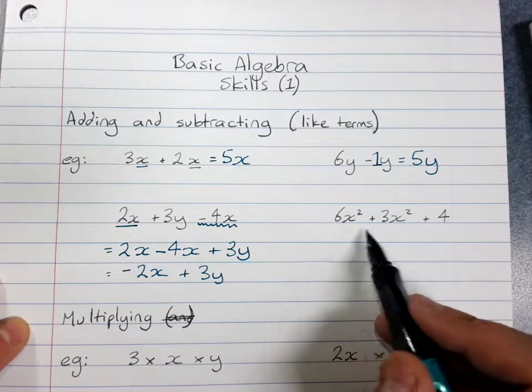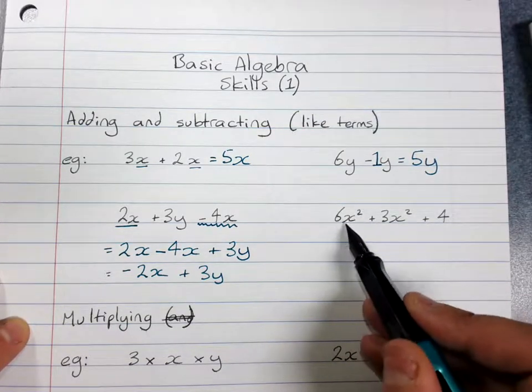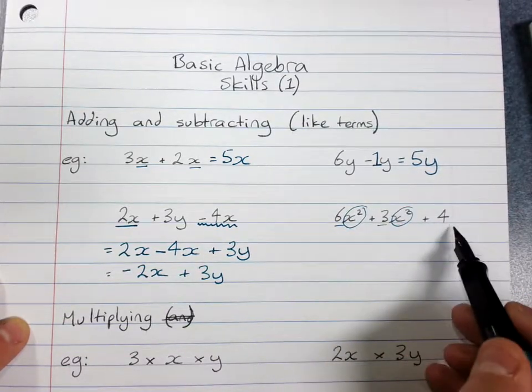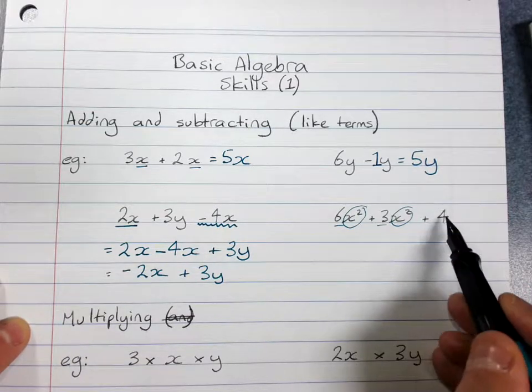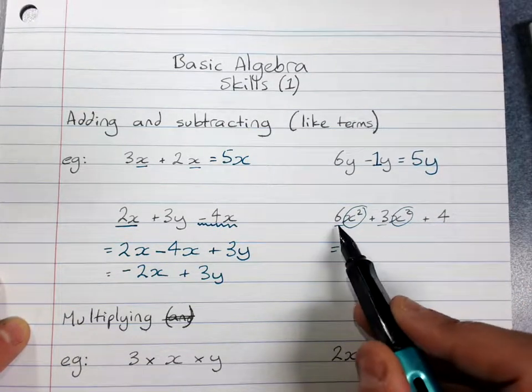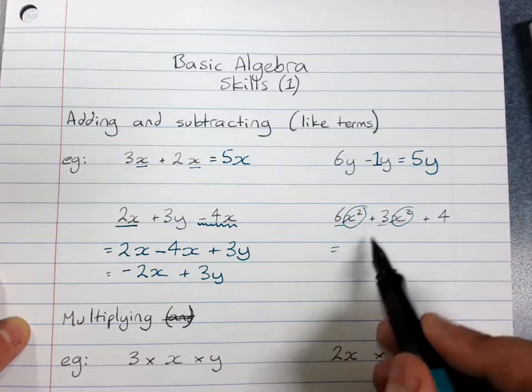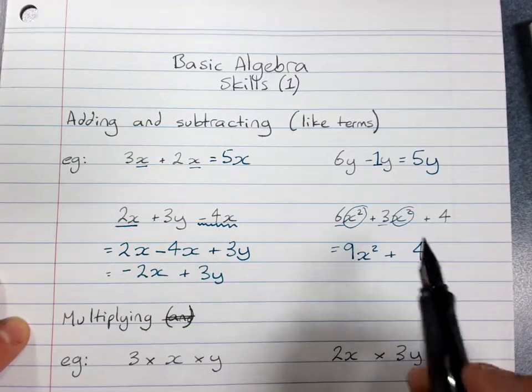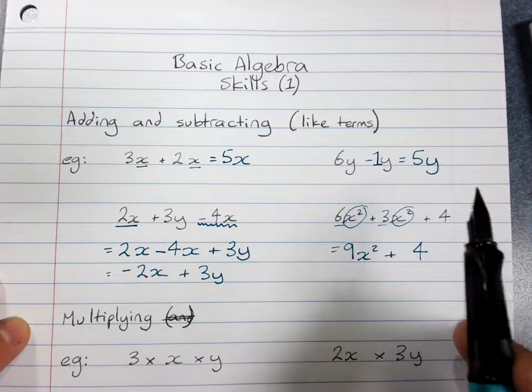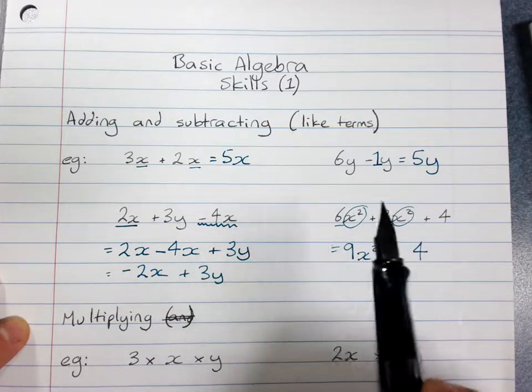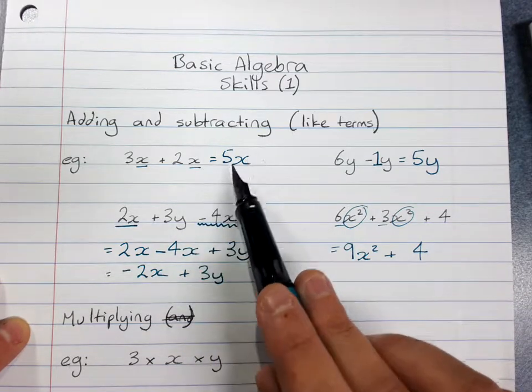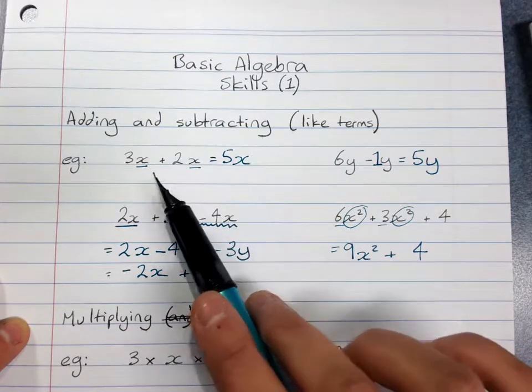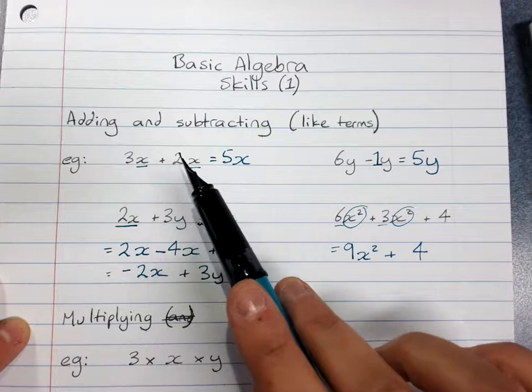So for this one, again I've got different things. I've got 6 lots of x squared plus 3 lots of x squared plus 4. Now that's not an x squared, that's just 4 on its own there. So whole numbers just do their own thing. How many lots of x squared do I have? 6 plus 3 is 9 lots of x squared plus 4. So adding and subtracting like terms, you're just grouping together and counting how many of each thing you've got. Don't ever change the powers of the pronumerals. This is not x plus x is x squared. It's just how many lots of x do I have? 3 lots plus 2 lots is 5 lots.